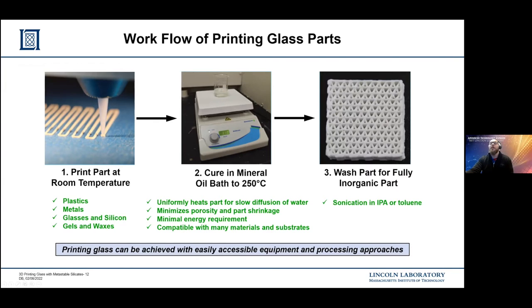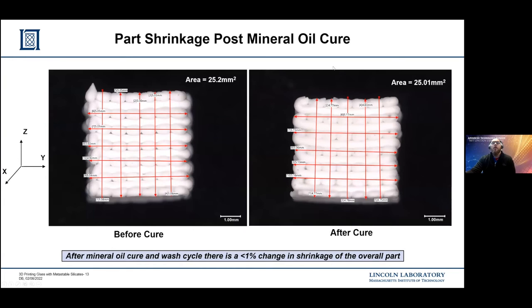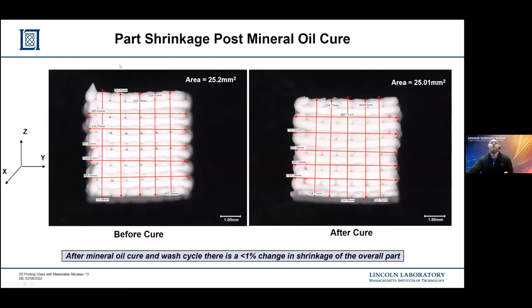Overall, this process is quite simple to make fully inorganic glass parts that can be printed at room temperature. To confirm the dimensional stability — unlike other techniques with drastic changes after sintering — we analyzed different faces of parts before and after cure using optical microscopy. Looking at two examples, we see less than 1% change in shrinkage of the overall part after it's been printed.